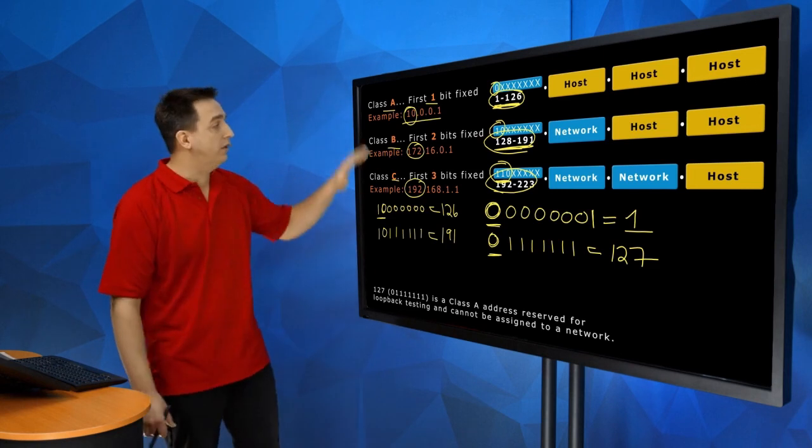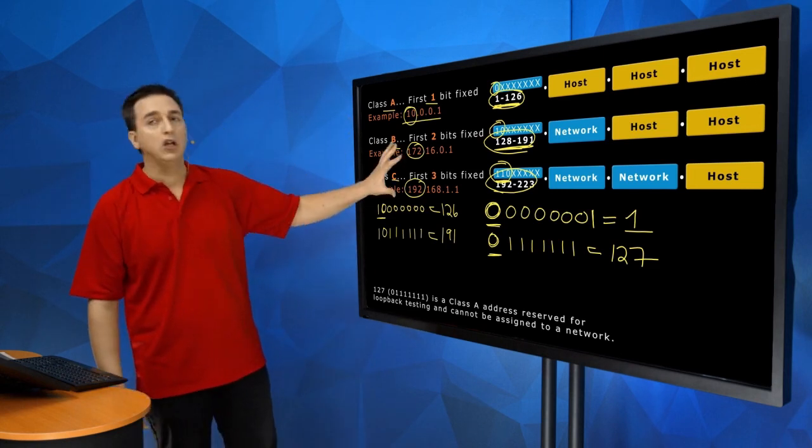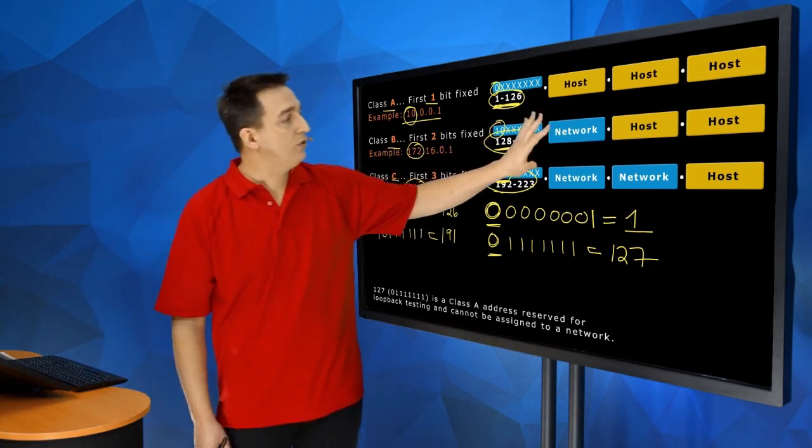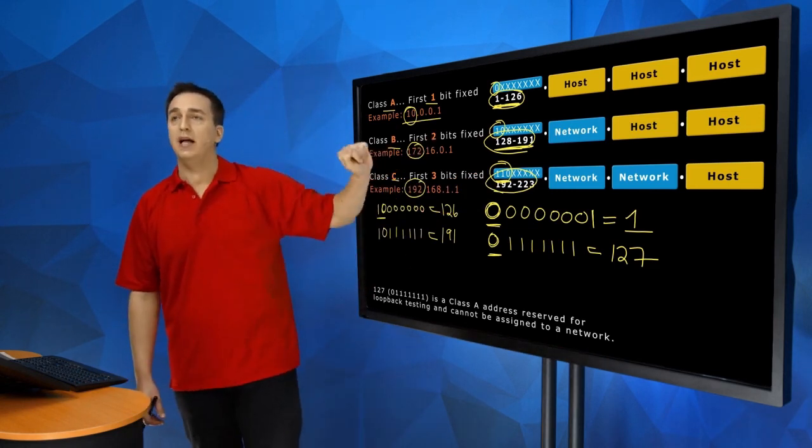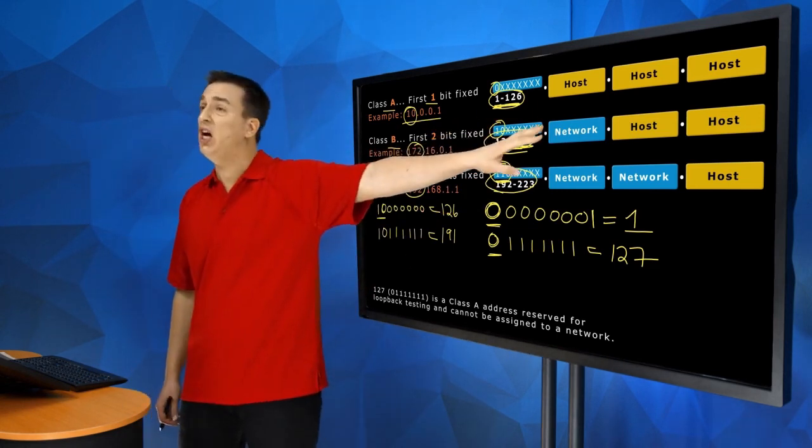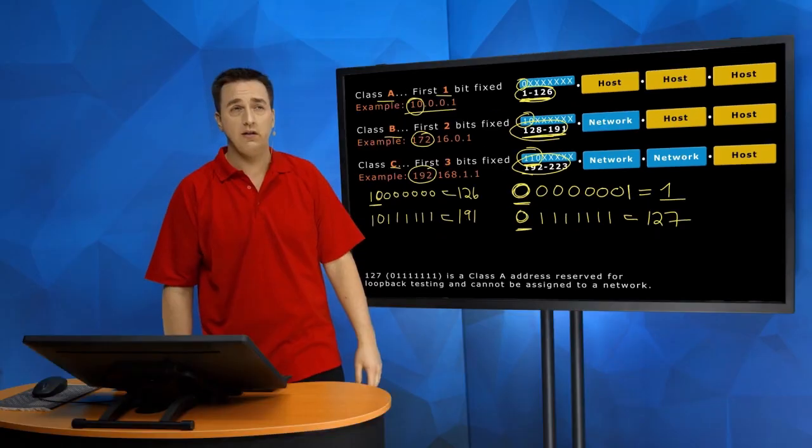And based on the fact that whether you're a Class A, B, or C, ultimately determines how big your network and host portion is. So the network portion of a Class A is really small, but it can contain a ton of hosts.